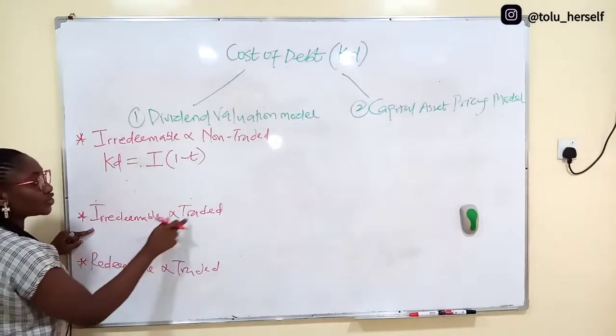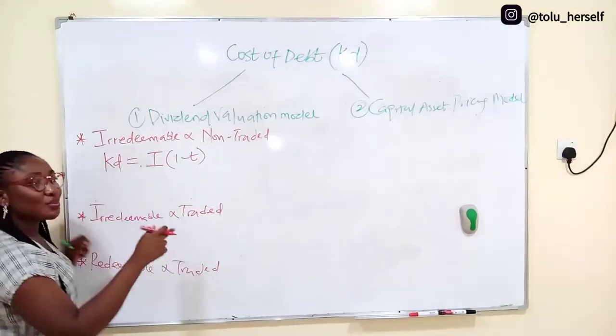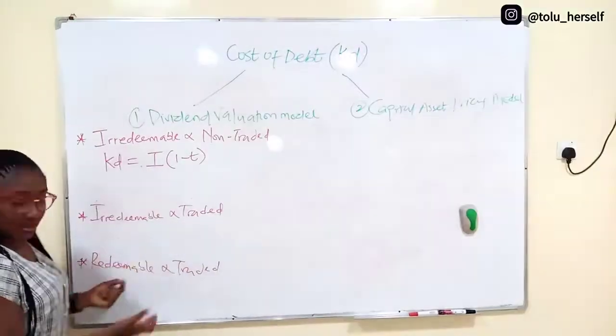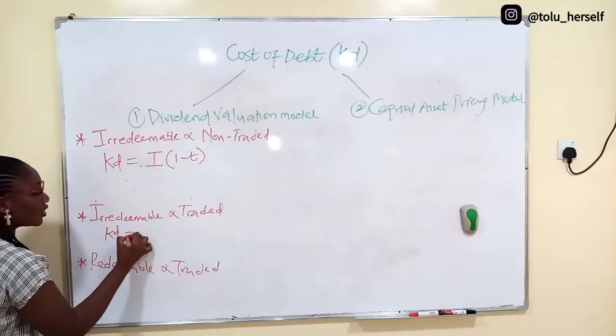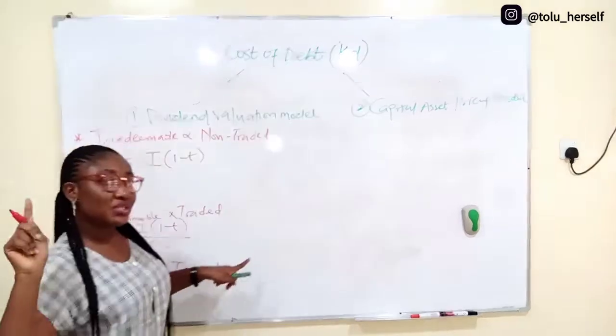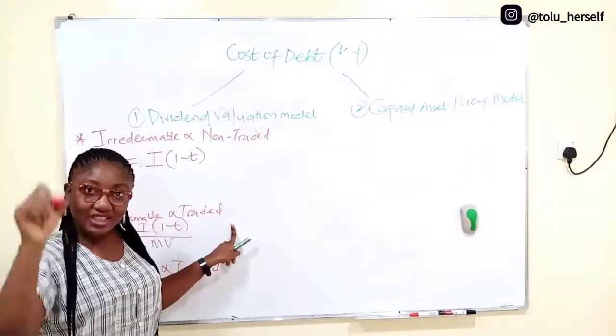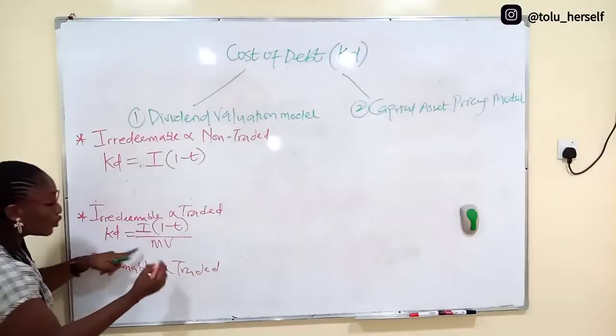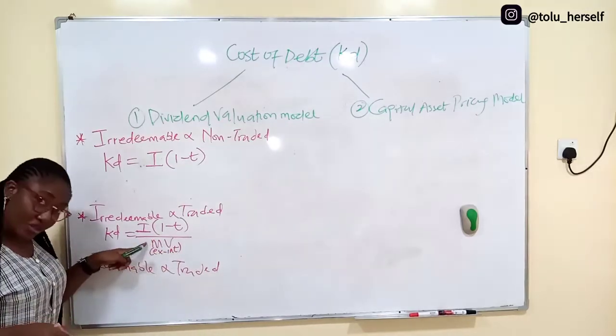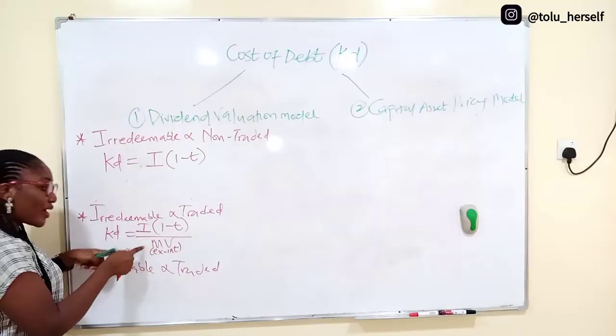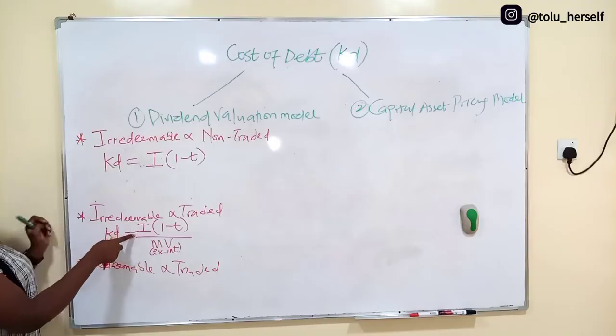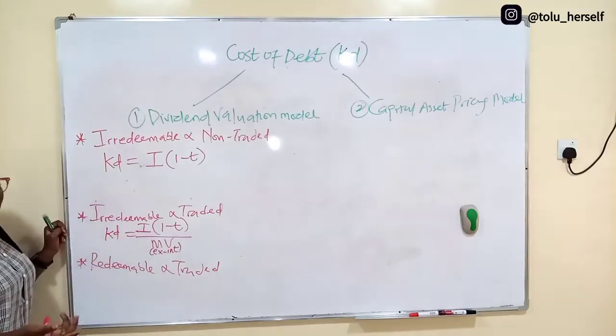Now for an irredeemable and traded debt, it means it has market value. So in the question, if they give the market value of the debt, it means that it is traded. So the KD in this scenario is interest times one minus T over market value. Remember cost of equity was dividend over market value. Now this market value must always be ex-interest. You won't be valuing cost of debt and adding the interest element to the market value.